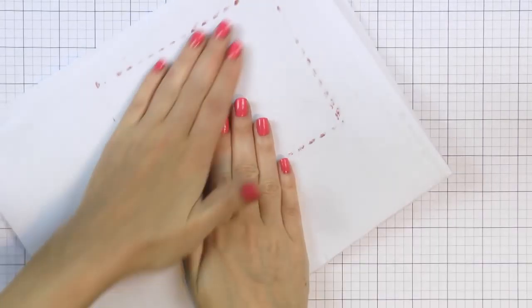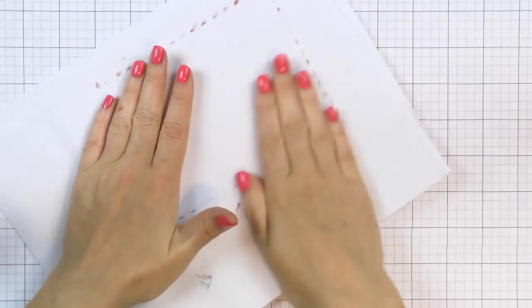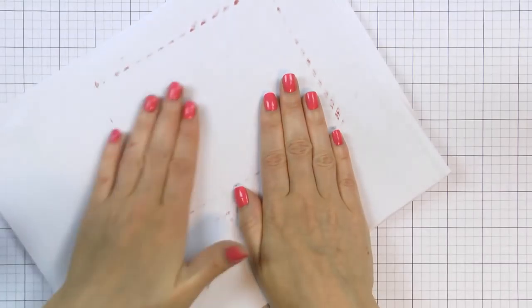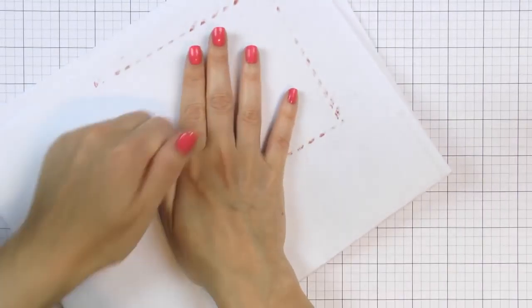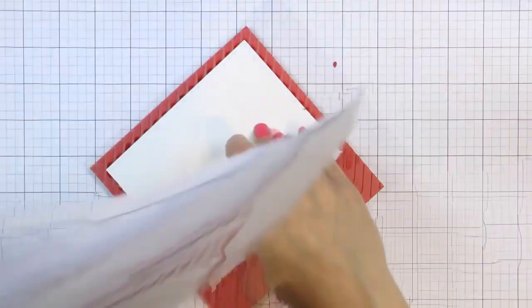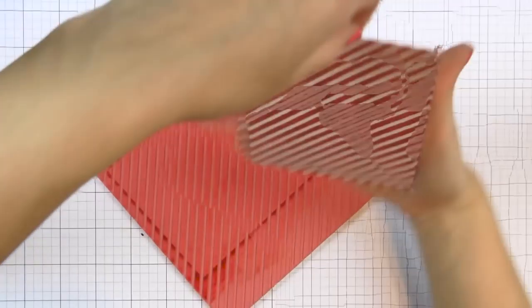Using a stamp positioner makes it much easier to stamp a background like this one. You can align it better, you can double stamp it, but if you don't have a stamp positioner you can still use those large background stamps and stamp like I just showed you here.